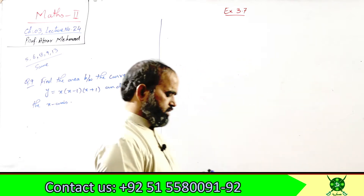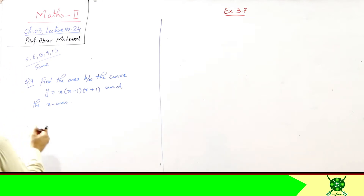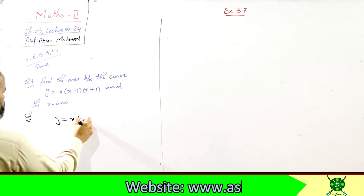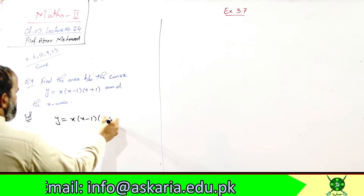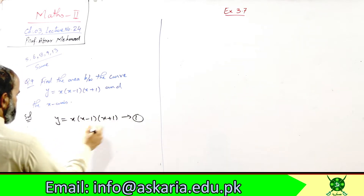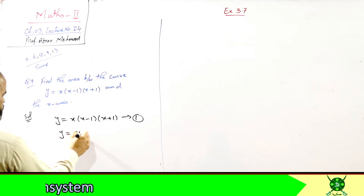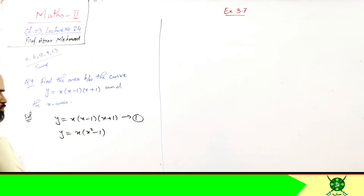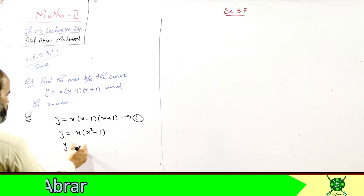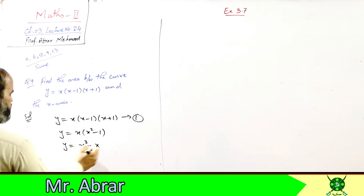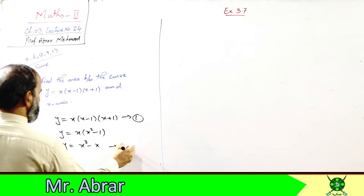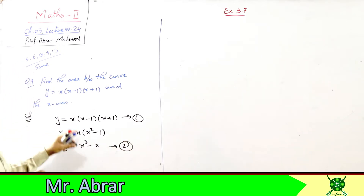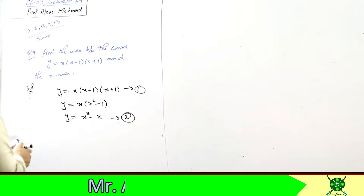After finding both limits, we will check the function's behavior in a table, draw the graph, and from there determine whether the function is throughout positive, throughout negative, or some portion positive and some negative. The function we have is: y = x(x−1)(x+1). Call this equation 1. Its simplified form is x³ − x. Call this equation 2.